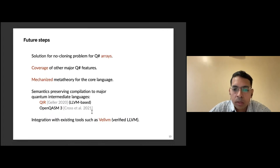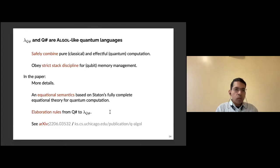To conclude, we think both lambda QSharp and QSharp are Algol-like languages. What I mean by that is they safely combine pure and effectful computation together, which is the distinct nature and essence of Algol-like languages. Similarly, they enforce strict stack discipline for memory management. See the paper for more details. We also have a nice equational semantics based on a fully complete equational theory by Sam Staton and the elaboration rules. The paper is on the archive on the website.